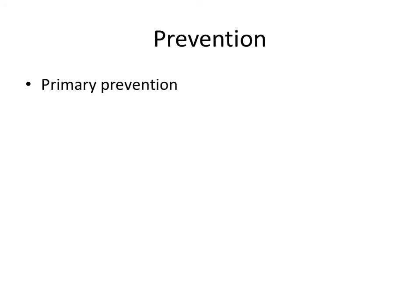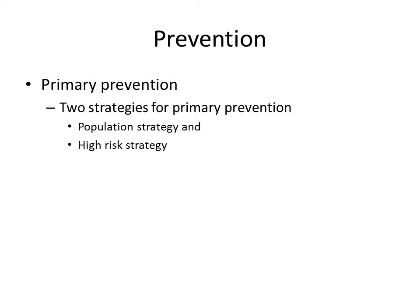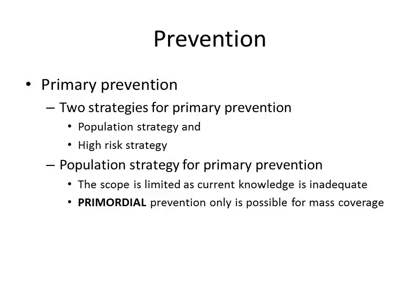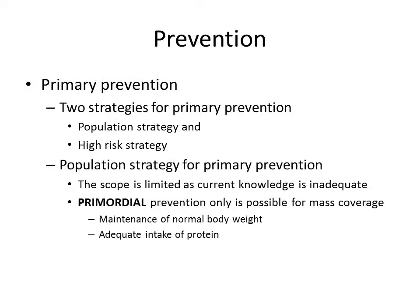Prevention in diabetes mellitus: primary prevention involves preventing diabetes from occurring altogether, using two strategies — population strategy and high-risk strategy. Population strategy: the scope is limited because knowledge of natural history is inadequate. The only prevention at a mass population level is primordial prevention — preventing the occurrence of risk factors, such as maintaining normal body weight, encouraging adequate protein intake, high fiber intake, and avoiding sweet foods.